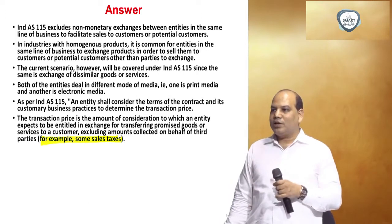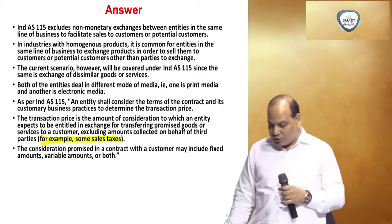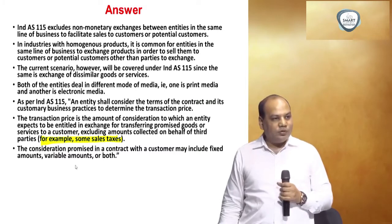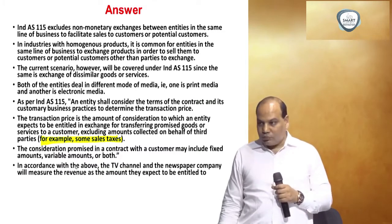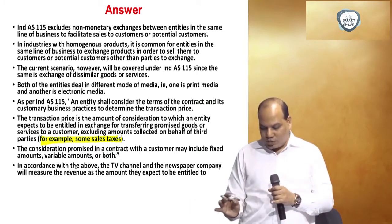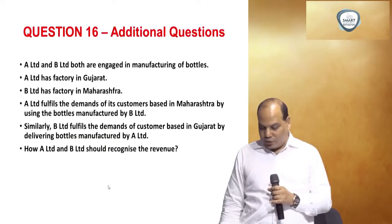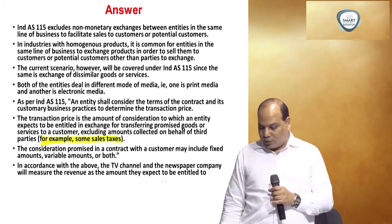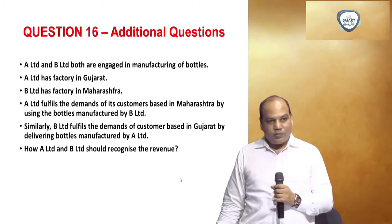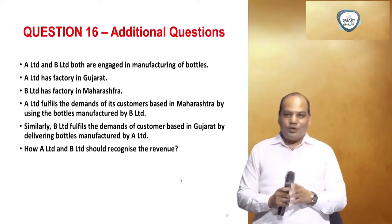Indirect taxes collected on sale are not revenue. The consideration promised in a contract may include a fixed amount, a variable amount, or both. In conclusion, the TV channel and newspaper company will measure revenue as the amount they expect to be entitled to — i.e., the fair value of the advertisement space or airtime.